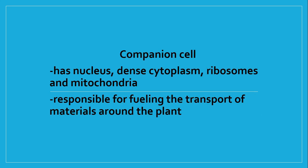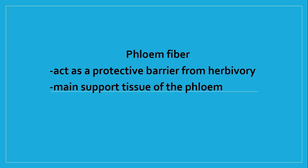Next, we have the companion cell, which has a nucleus, dense cytoplasm, many ribosomes, and many mitochondria. It undertakes metabolic reactions and other cellular functions, unlike the sieve element or sieve tube, which lacks appropriate organelles. One function of the companion cell is to fuel the transport of materials around the plant. Third is the phloem fiber, which acts as a protective measure against herbivores by producing a gritty texture in the plant. Phloem fibers are sclerenchyma cells — the main support tissue of the phloem — providing stiffness and strength to the plant.